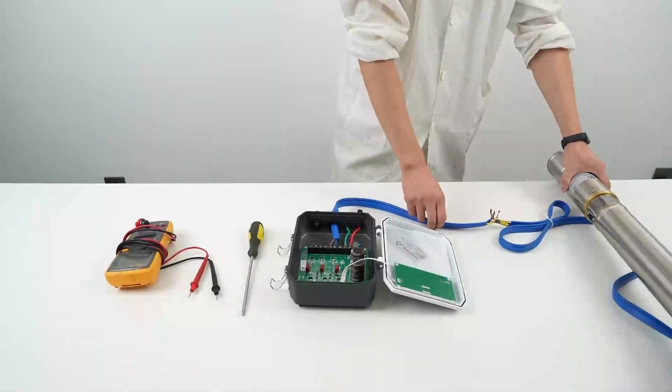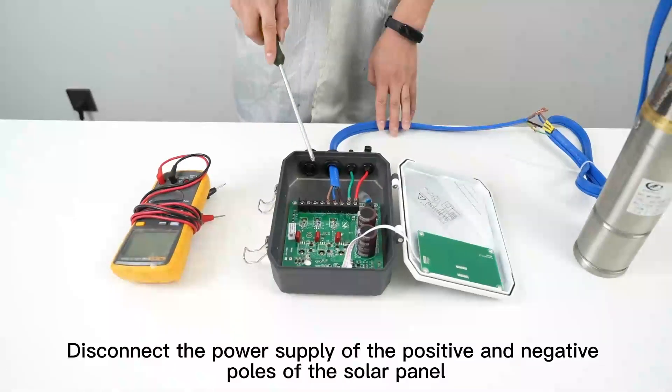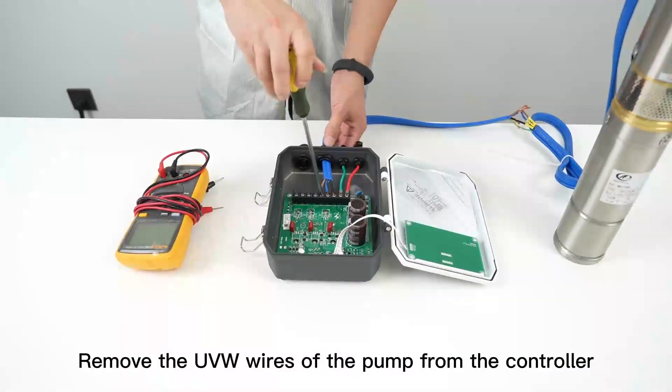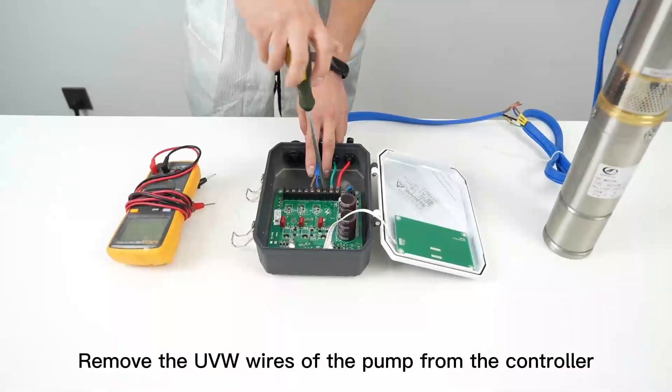If the connection is good, disconnect the power supply of the positive and negative poles of the solar panel. Remove the UVW wires of the pump from the controller.